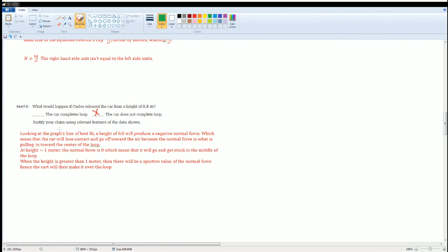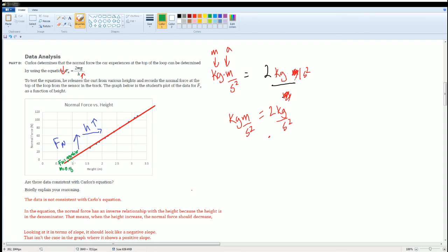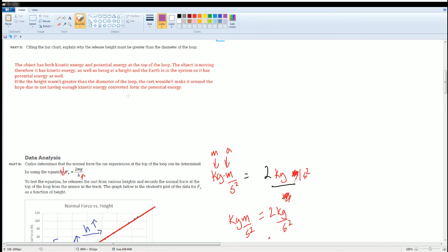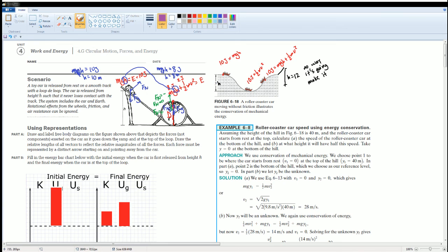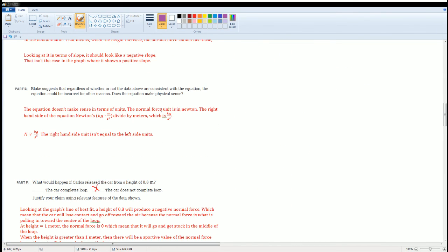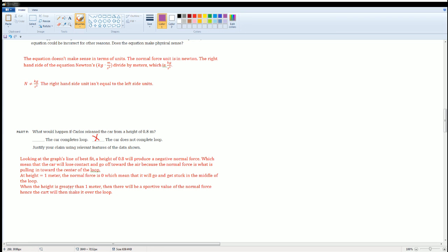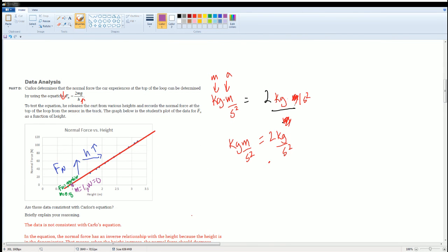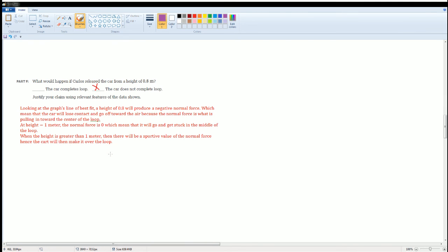So, I said it here that at 1, the normal force is gonna be 0, which means it will go there and get stuck in the middle of the loop. That makes sense. And the 0 is right here. If it's 1, m is equal to 1, you see that the height, the normal force there is gonna be equal to 0. That means it gets stuck right here just there in the loop. Until acted on by an external force. But if the height is greater than 1 m, anything above to the right-hand side of that 1, do you see how it's a positive value of the normal force? That means that it will have enough to go over the loop, basically.